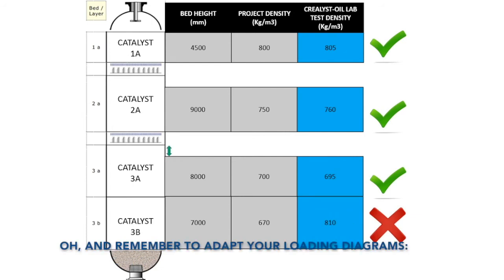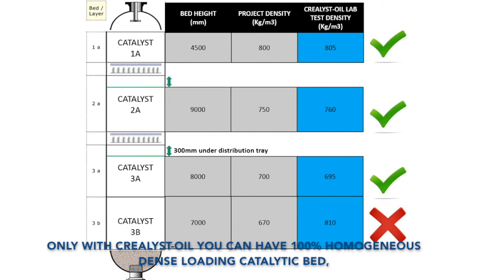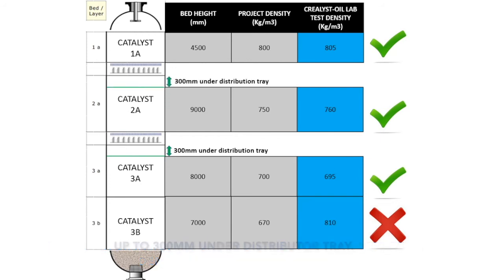Remember to adapt your loading diagrams. Only with Crealist Oil can you have a 100% homogeneous dense loaded catalytic bed up to 300 mm under the distribution tray.